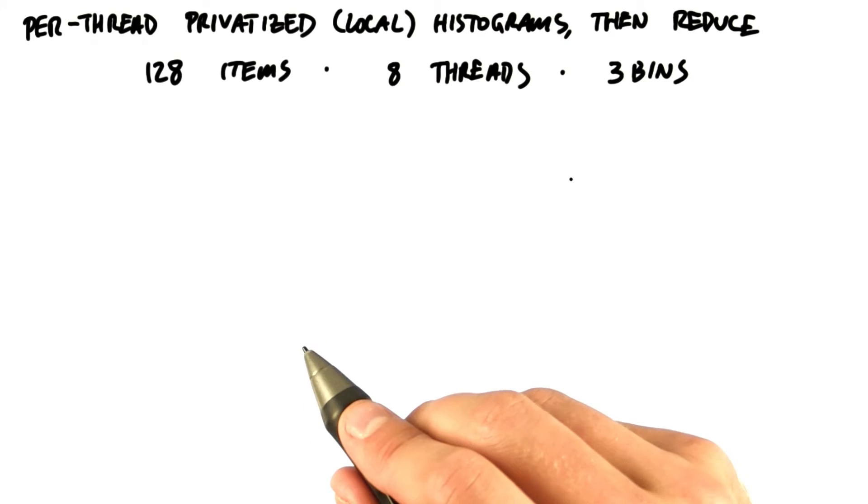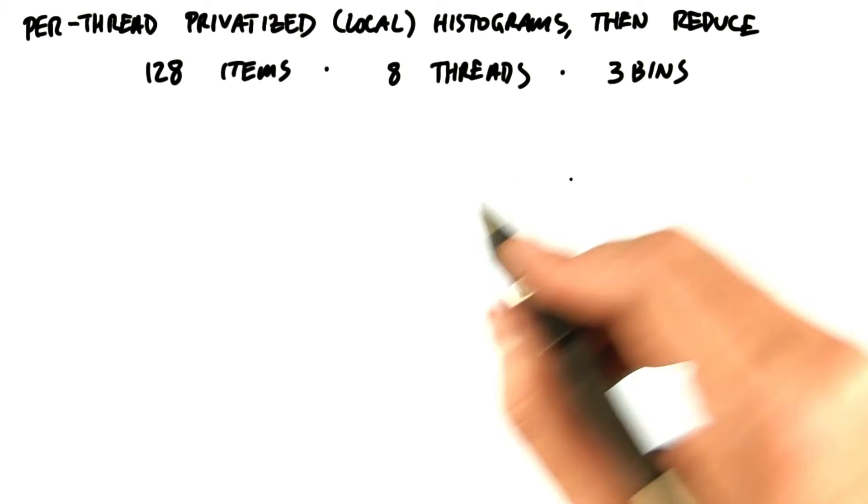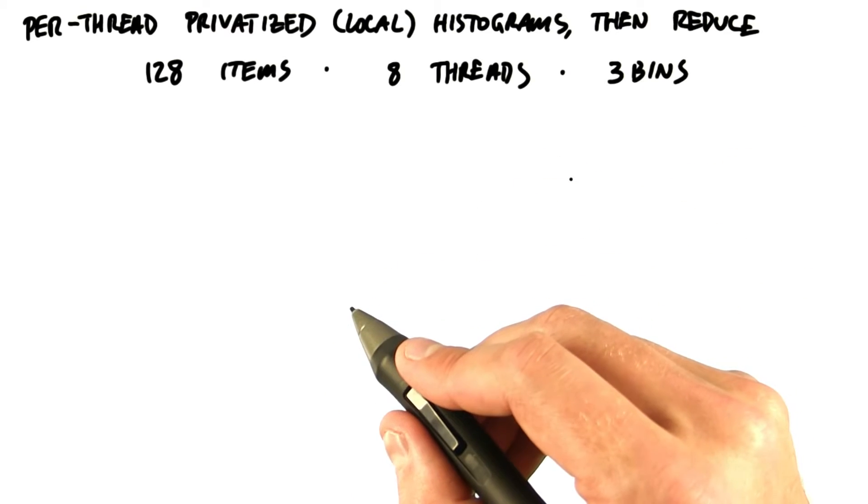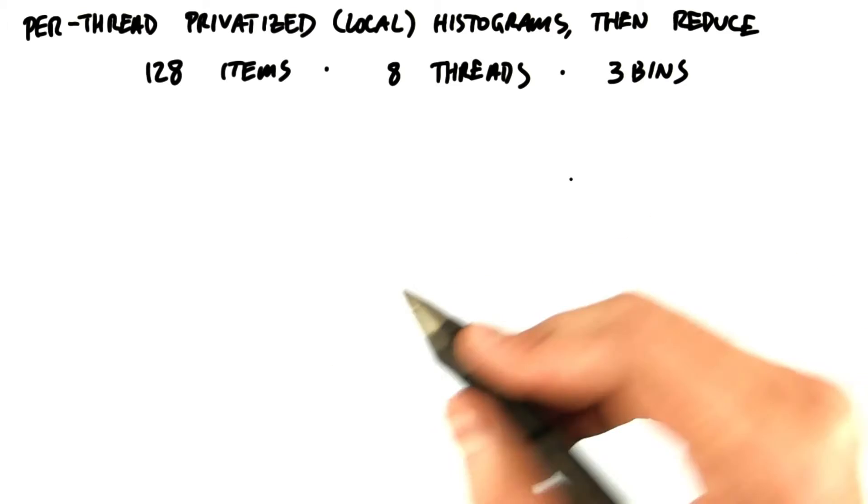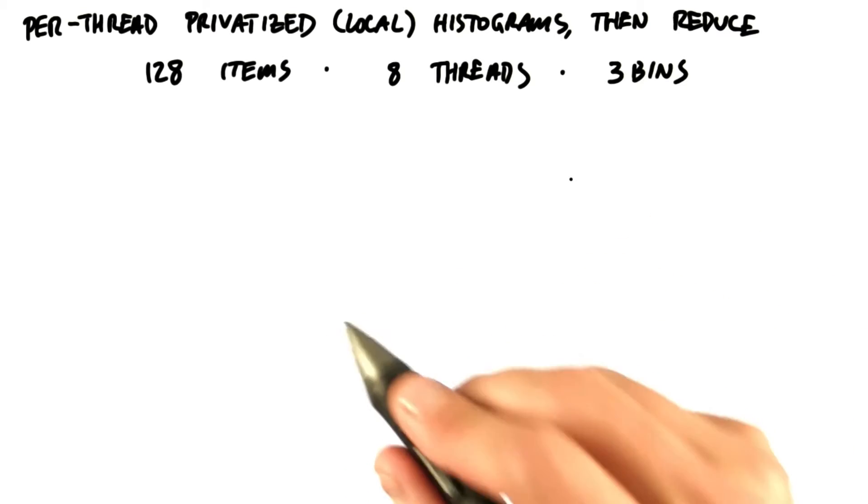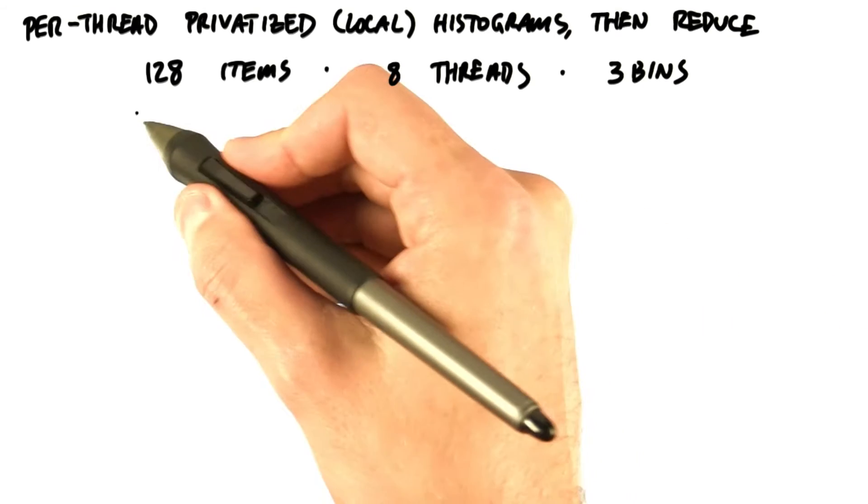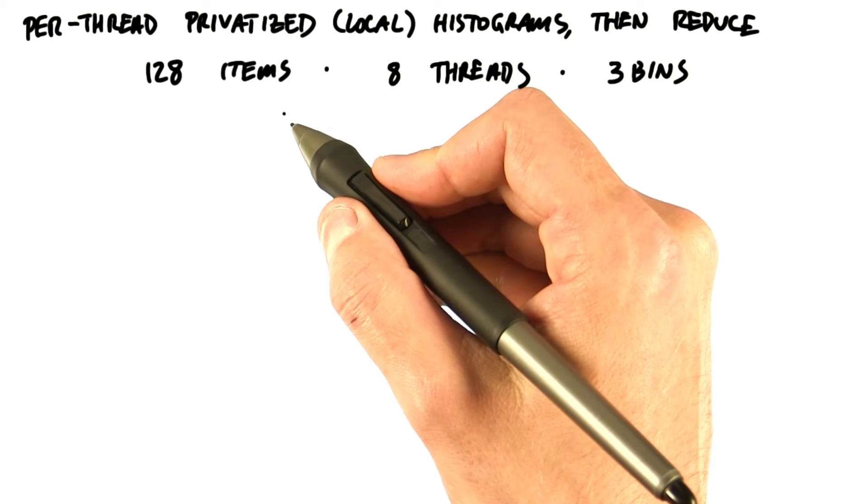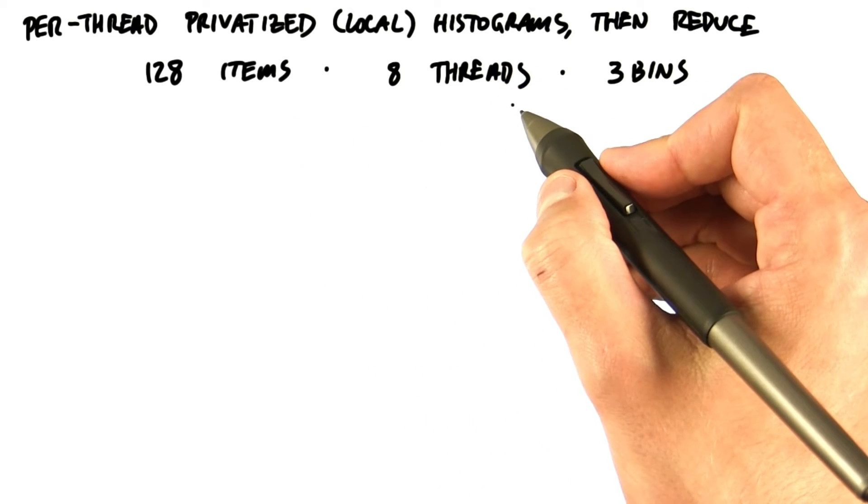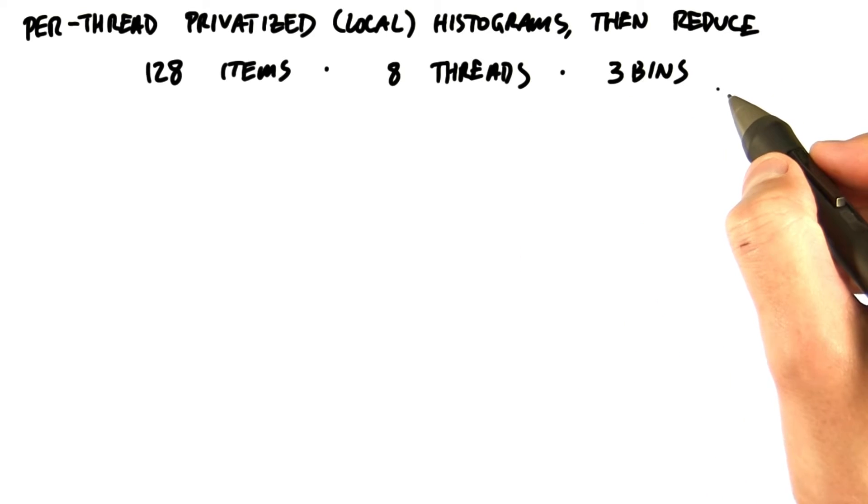Let's say we have a large number of items to place into our histogram but relatively few bins. We're going to consider a pretty small example here for the sake of discussion, just so we can draw everything that we need to. We have 128 items to place into bins, 8 threads that we've launched to take care of these items, and we only have 3 bins.